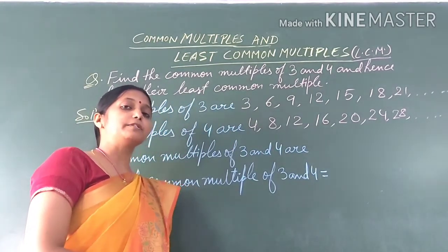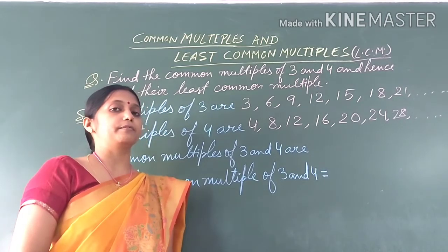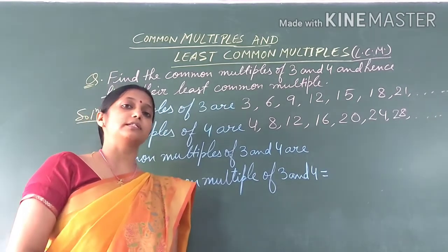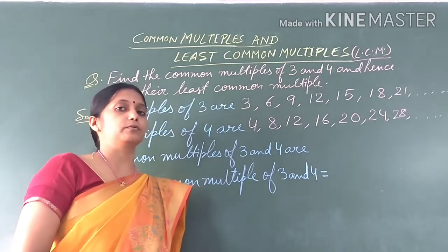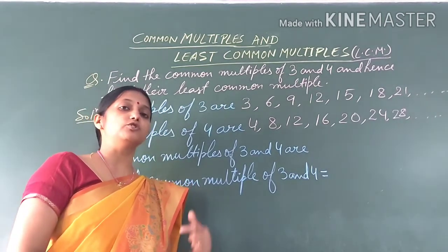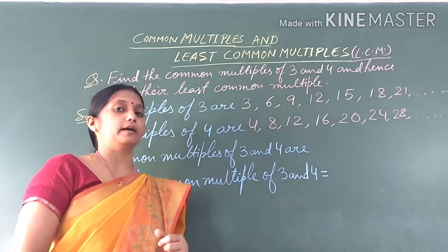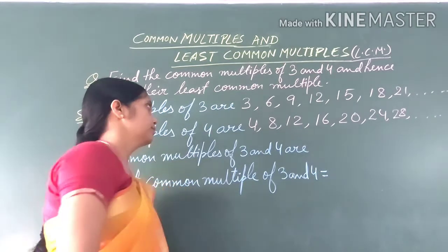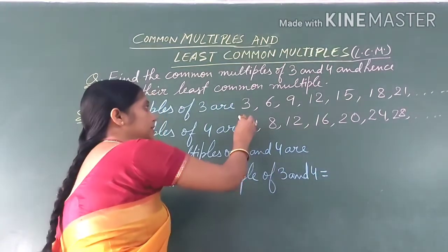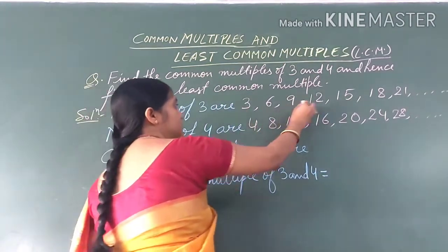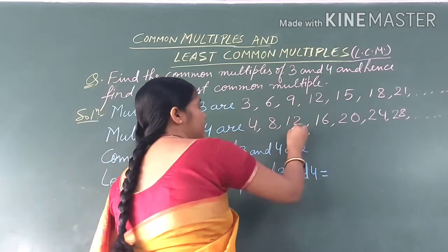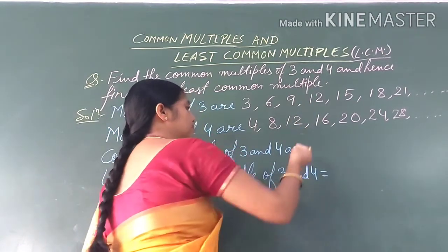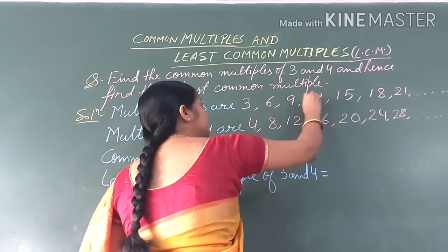Now we will find common multiples. Common multiples of 3 and 4 means numbers that appear in both lists — that is, both of them are the same. For example, 12 is the same in both.